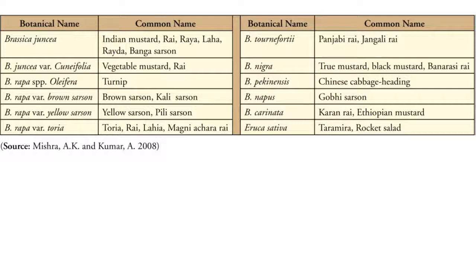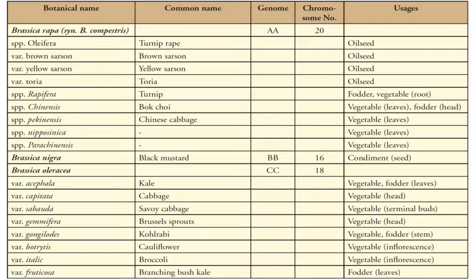Brassica nigra is true mustard, black mustard, or Banarasi Rai. Brassica pekinensis is Chinese cabbage or heading cabbage. Brassica napus is Gobi Sarso. Brassica carinata is Karan Rai or Ethiopian mustard. Eruca sativa is Taramira or rocket salad. Other names include: Brassica rapa ssp. oleifera as Turnip Rape; Chinensis as Bok Choi; Pekinensis as Chinese cabbage; Brassica nigra as black mustard; Acephala as kale; and Capitata as cabbage, with their respective usages given.